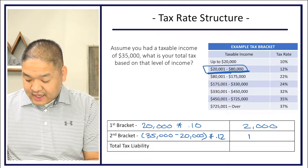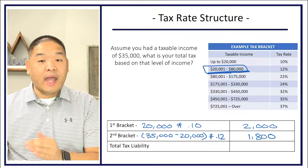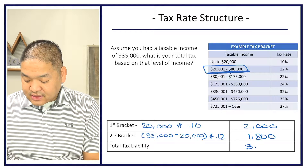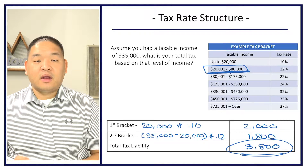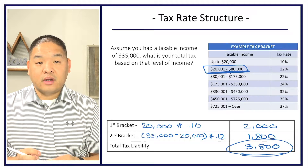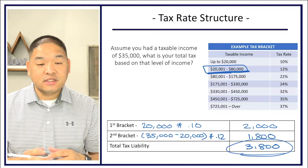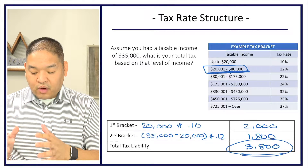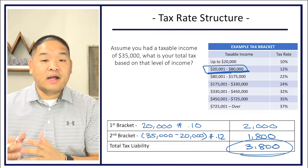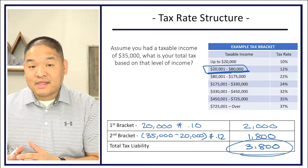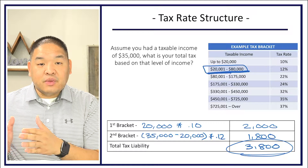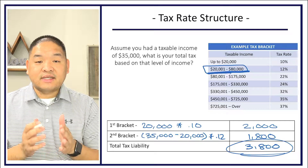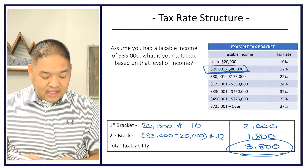That $15,000 times the 12% tax rate gives us $1,800. Adding up our bracket calculations: $2,000 + $1,800 = $3,800 total tax. This taxpayer should have paid $3,800 through withholdings or quarterly estimates. If they paid more, they get a refund; if they paid less, the difference is what they'll need to remit to the IRS or Department of Treasury by the filing deadline.